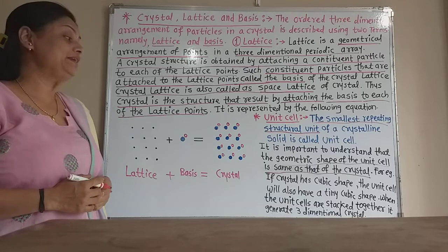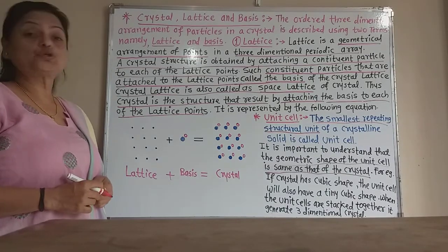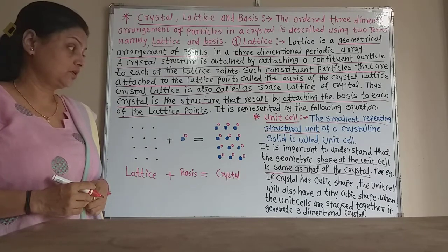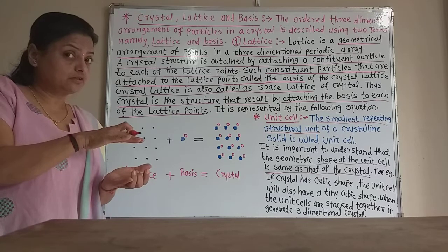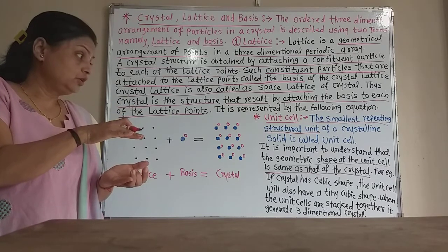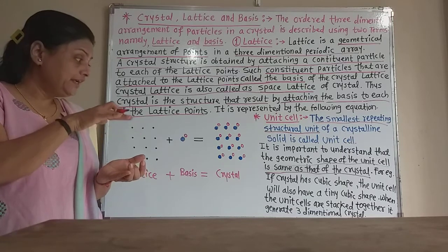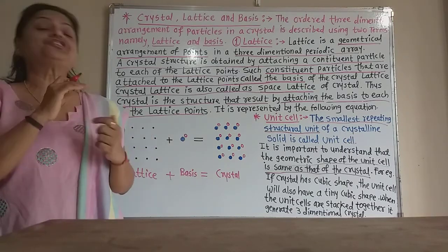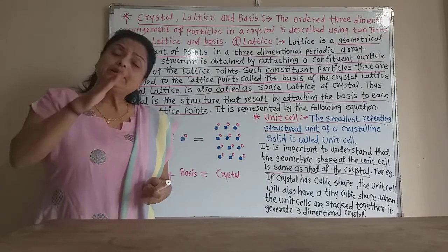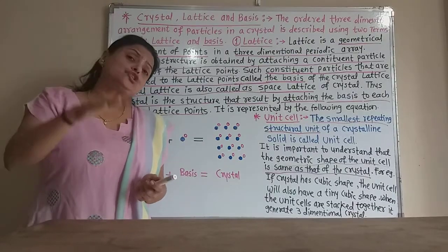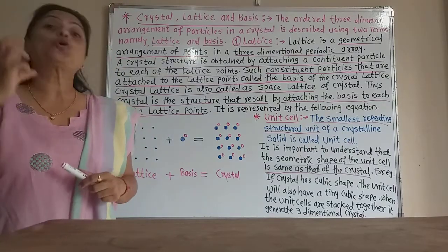When unit cells are stacked or put together on each other, they generate a three-dimensional crystal. On repeating the unit cell in a stack, we obtain the three-dimensional macro crystal. The unit cell is the basic structural unit of the crystal, and many unit cells stacked together form the three-dimensional crystal.